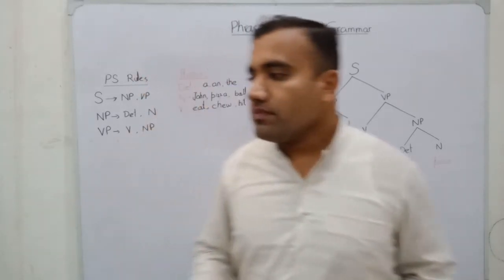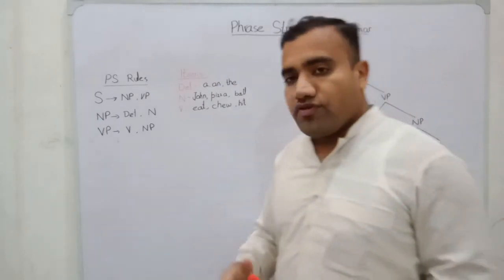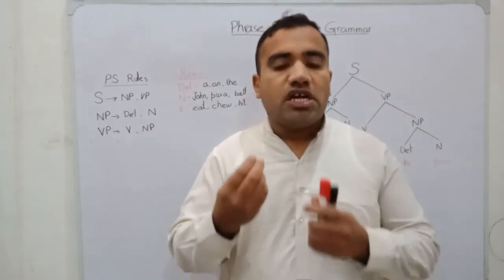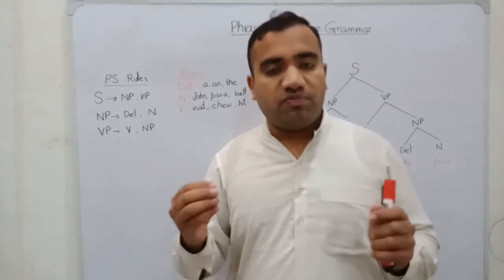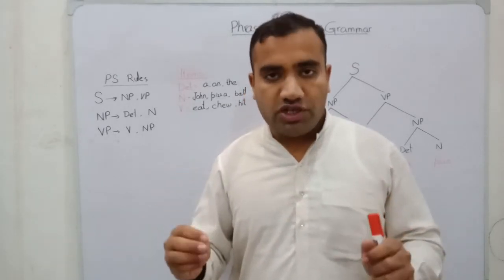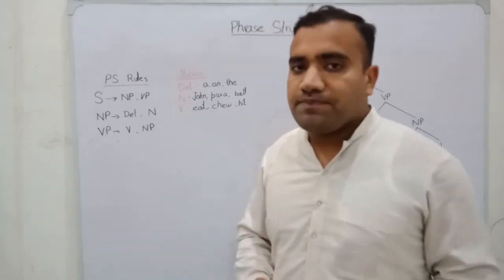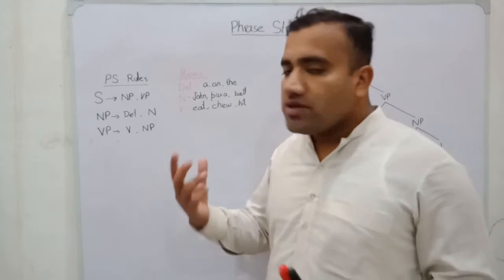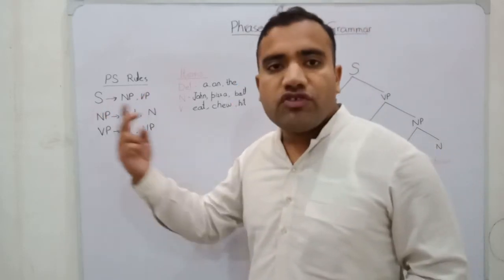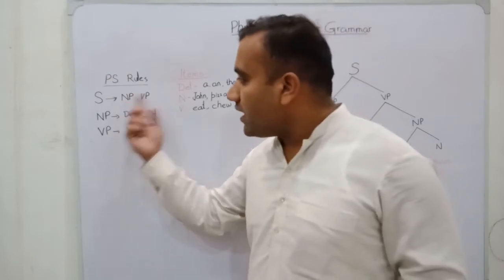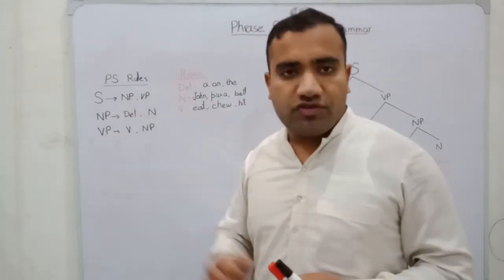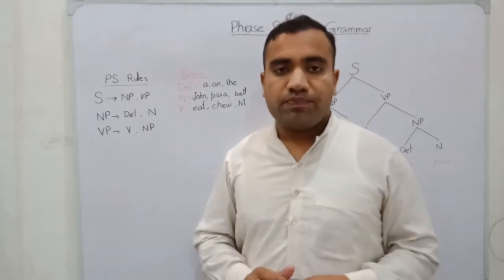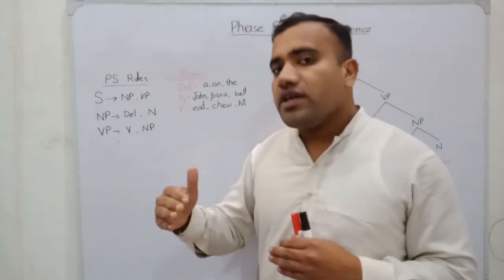Chomsky constructed the phrase structure rules and claimed that every sentence in every language can be represented by the symbol S. He said that S has two components: NP, which is the noun phrase, and VP, which is the verb phrase. So a sentence basically consists of a noun phrase and a verb phrase.